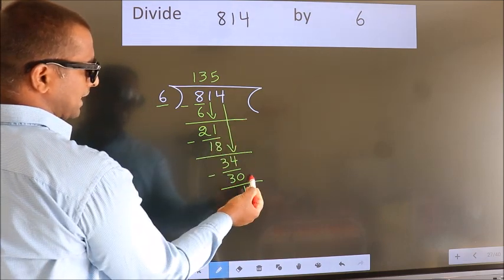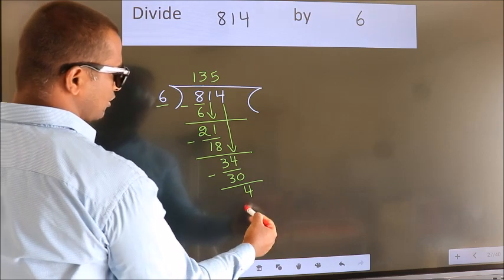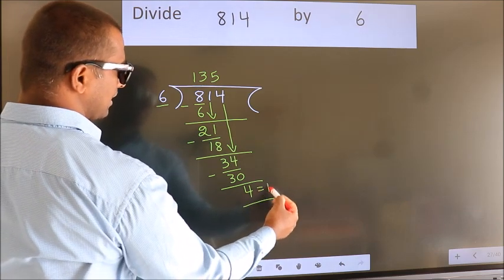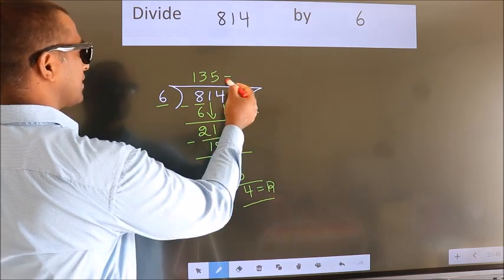No more numbers to bring down. So, we stop here. This is our remainder. This is our quotient.